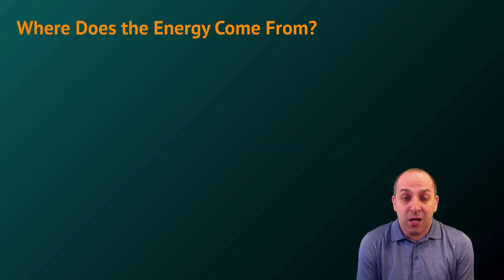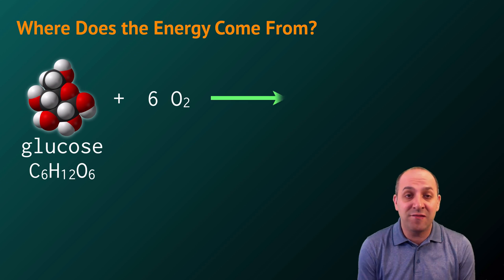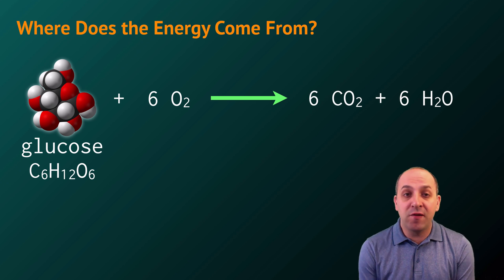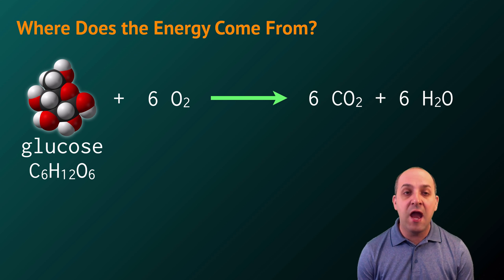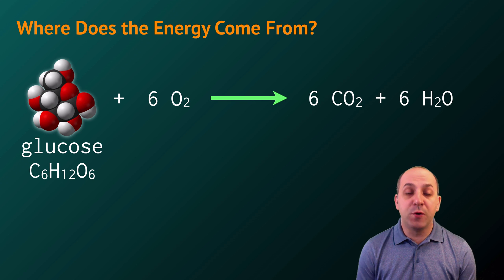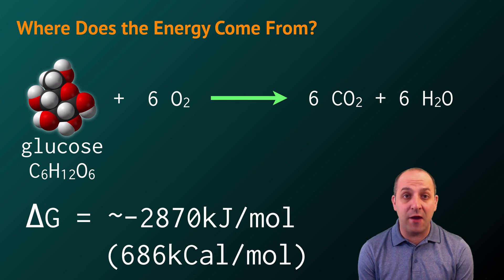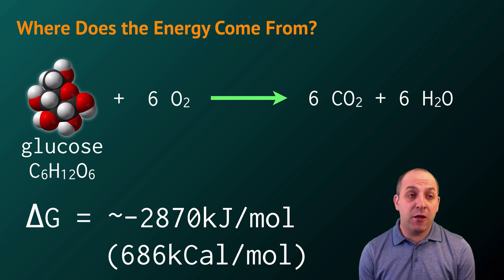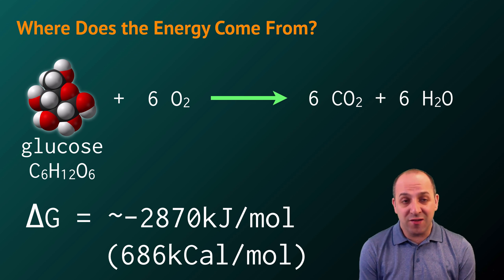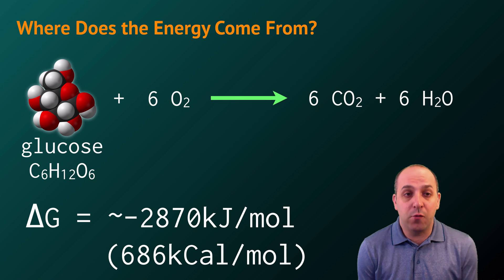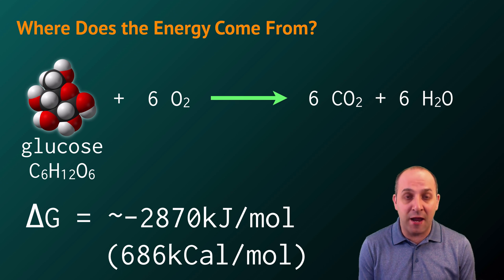The next natural question is: where does that free energy come from? It comes from other processes in cells. One example is aerobic cellular respiration: we take food molecules — here represented by glucose — combine them with oxygen, which produces carbon dioxide and water and releases a good deal of energy. The delta G value for aerobic cellular respiration is approximately −2870 kilojoules per mole, because cellular respiration is an exergonic reaction and releases free energy.